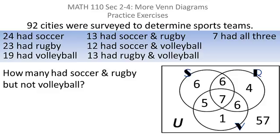Second question. How many had soccer and rugby, but not volleyball? Well, soccer and rugby, that's an intersection. So I'm looking at the intersection of the soccer circle with the rugby circle. That's 13.